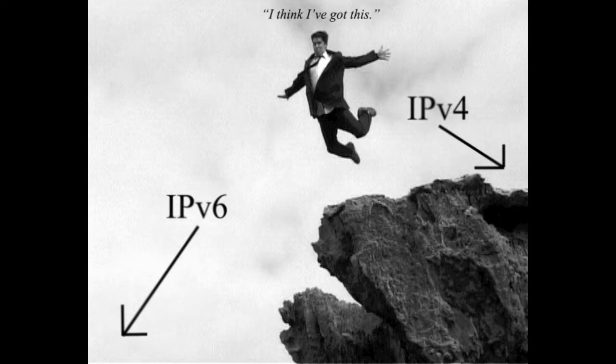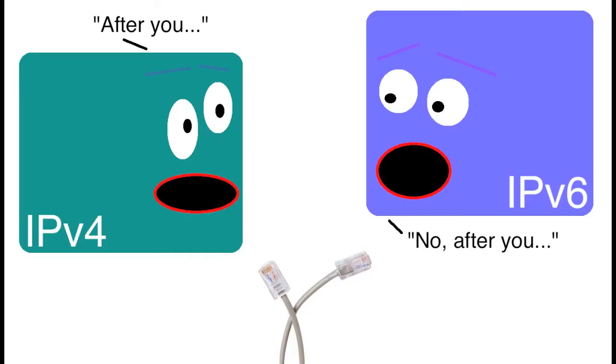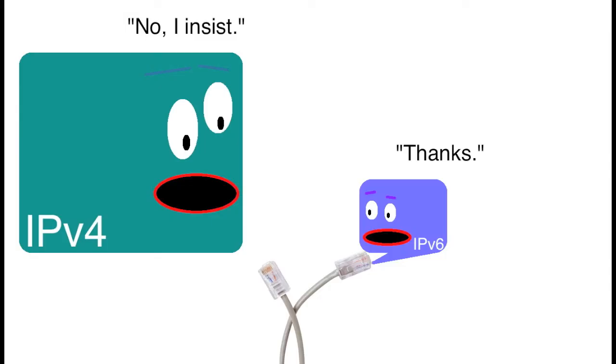No one expects that your organization will make the switch from IPv4 only to IPv6 only. As such, the migration process should be integrated. One method includes running both IPv4 and IPv6 on your routers, switches, and end nodes at the same time. This method is called dual stacking, and the idea is to set IPv6 communication as the preferred protocol.